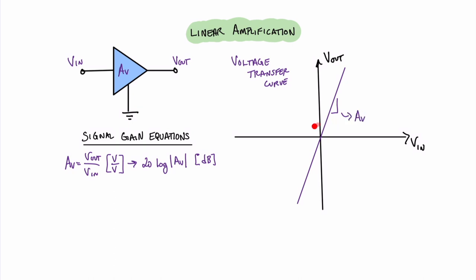If this curve was not exactly a line — say it had some curving in its shape — then we would say that in those areas our signal would distort. So what we're looking for in the voltage transfer curve of a real circuit is something that has as close as possible to a linear response from voltage in to voltage out.